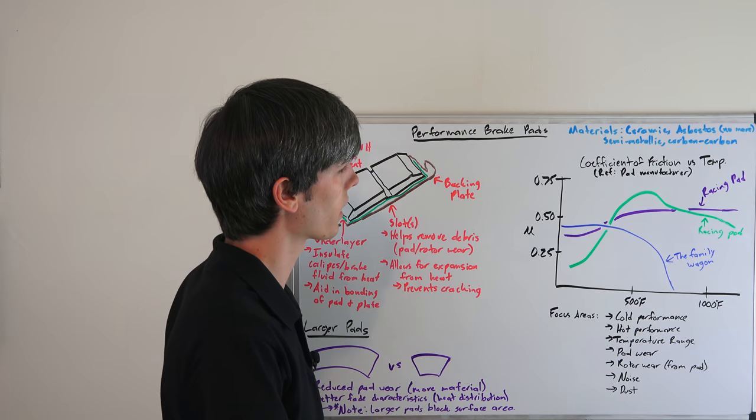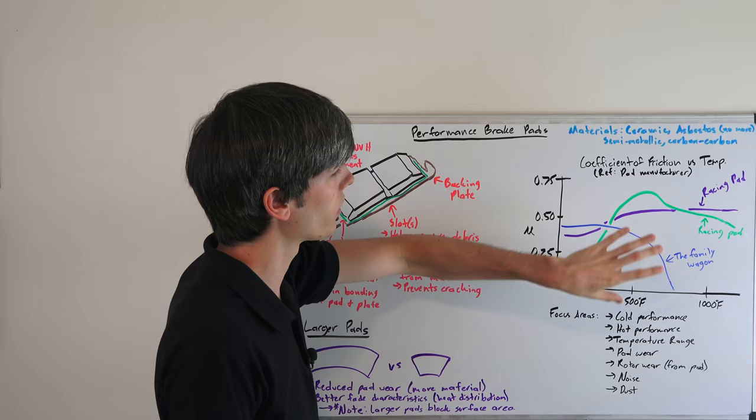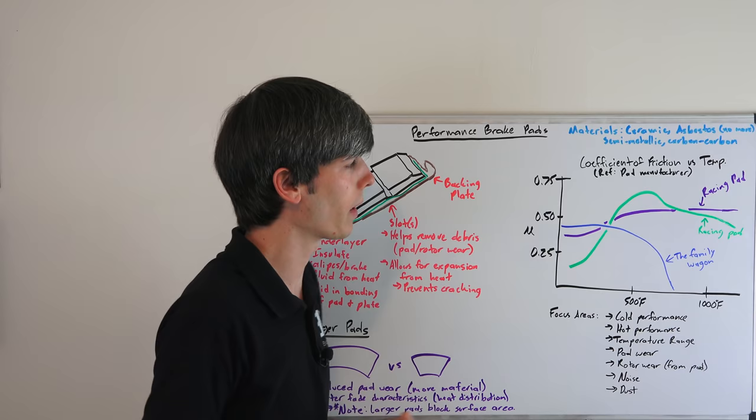So something used in racing will look very different where the coefficient of friction may be very low at cold, but that doesn't matter because once they get up to operating temperature, that's the range they're going to stay in throughout the whole race.